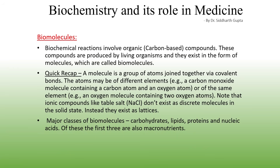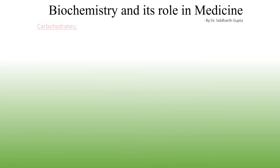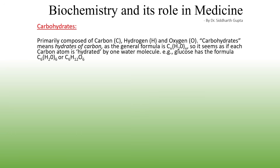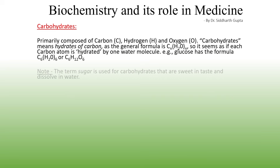The major classes of biomolecules are carbohydrates, lipids, proteins, and nucleic acids. Of these, the first three — carbohydrates, lipids, and proteins — are also macronutrients. Carbohydrates are primarily composed of three elements: carbon, hydrogen, and oxygen. The term carbohydrates literally means hydrates of carbon, as the general formula for carbohydrates is Cₙ(H₂O)ₙ — one water molecule for each carbon atom. For example, glucose has the formula C₆H₁₂O₆. The term sugar is often used colloquially to refer to carbohydrates, specifically those that are sweet and soluble in water.